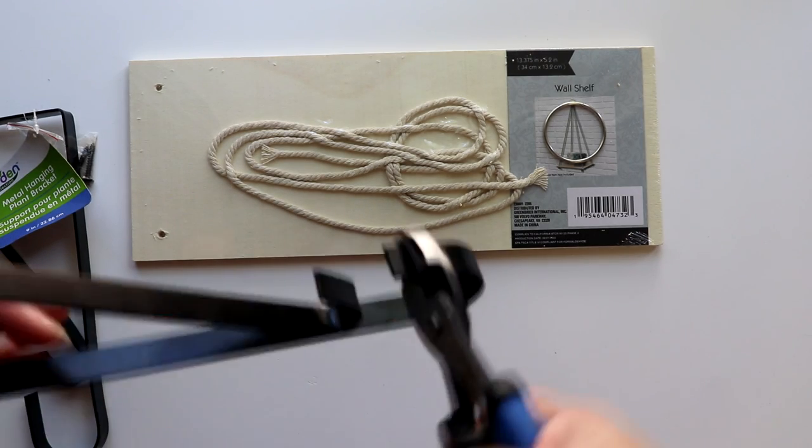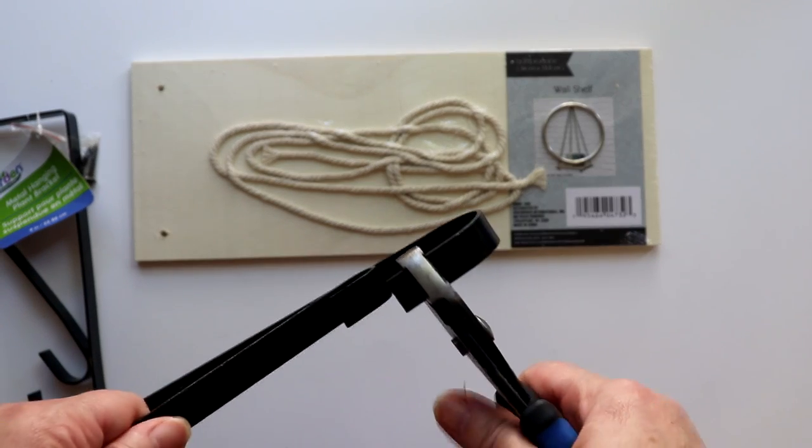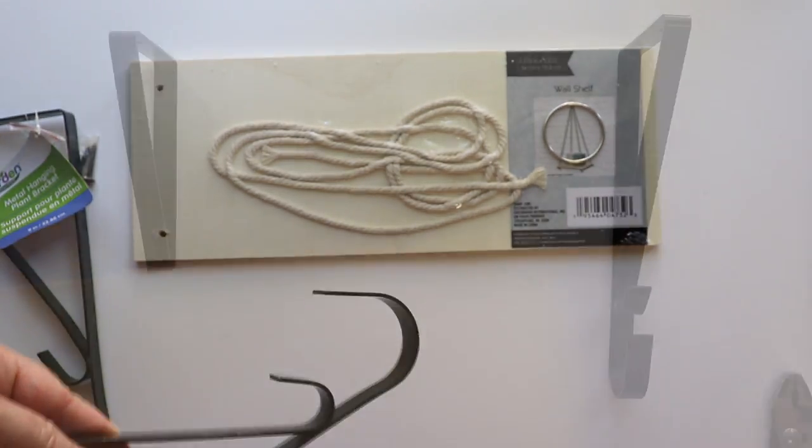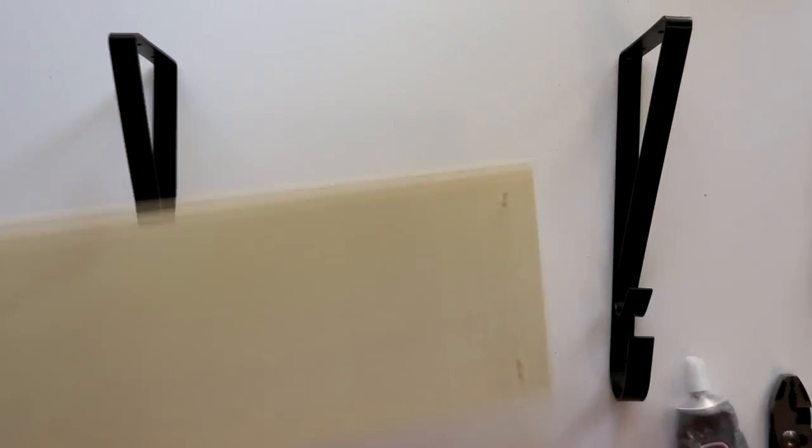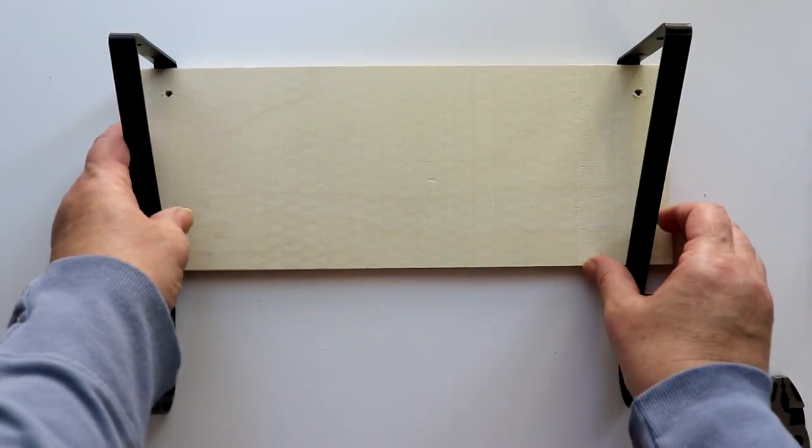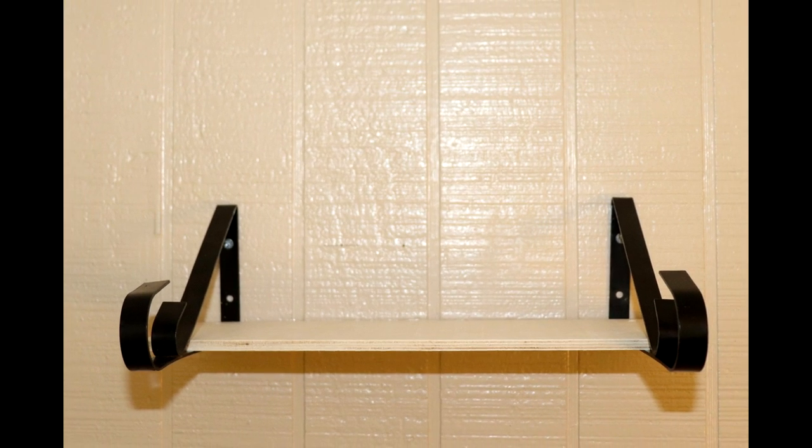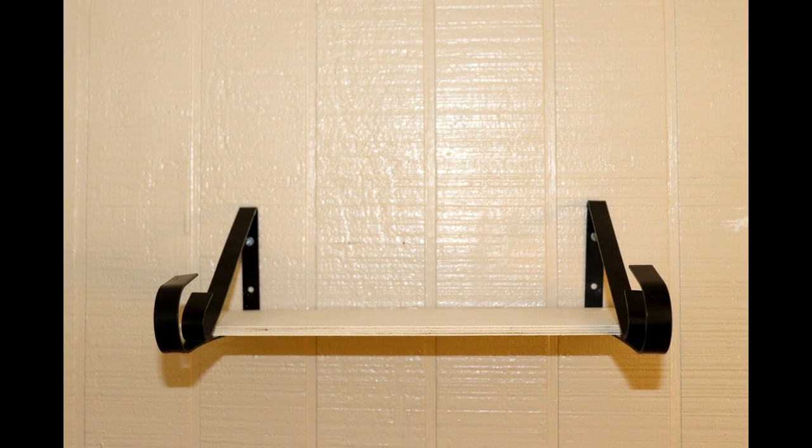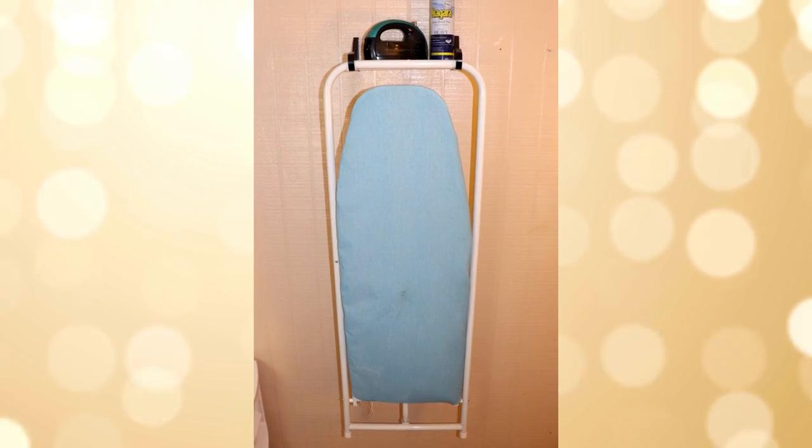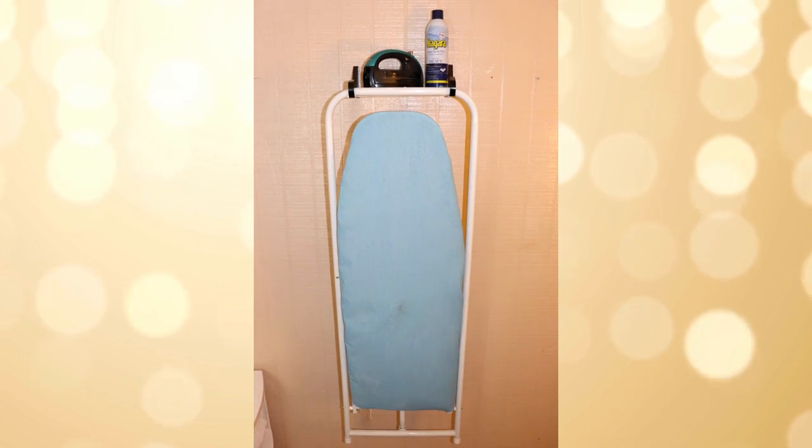My ironing board will actually fit on the hooks as is. However, if you need to widen the hook a little, you can easily do so with some pliers. Next, the shelf can be attached to the bracket using E6000 glue. Just place some on the bracket and sit the wood plank right on top. Once the glue is set, attach the shelf to the wall using anchors if necessary. A folded ironing board can be secured onto the hooks and the shelf makes a great home for an iron and spray starch.